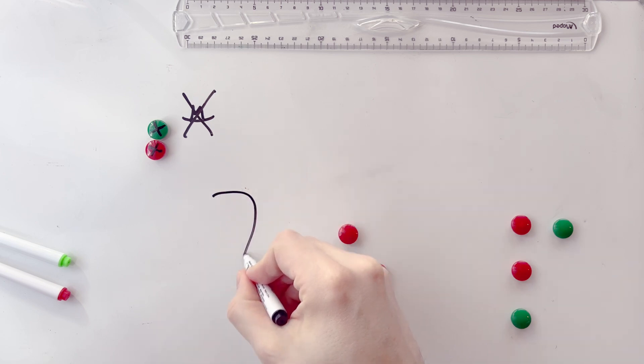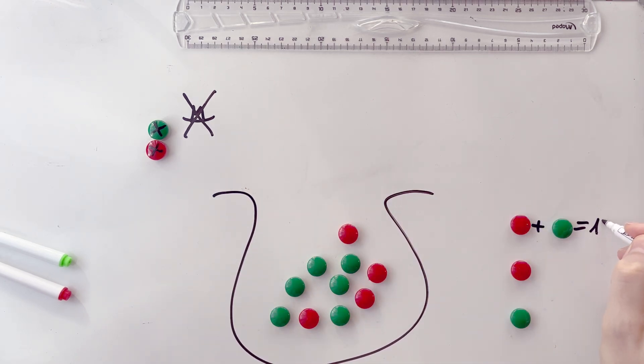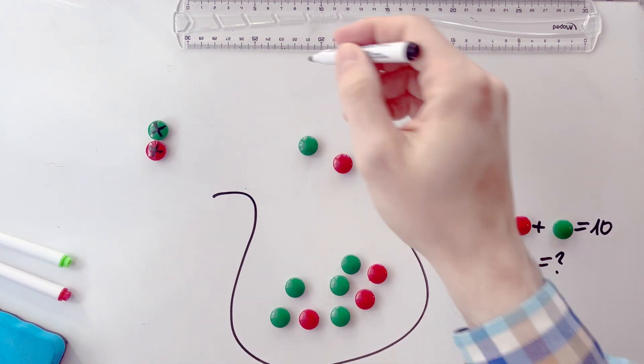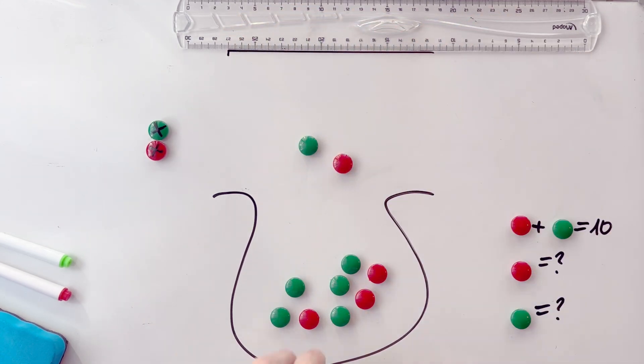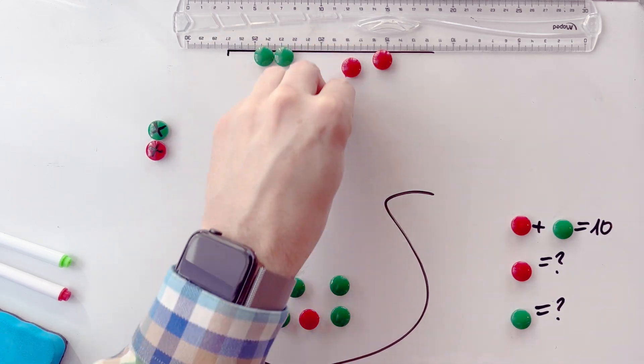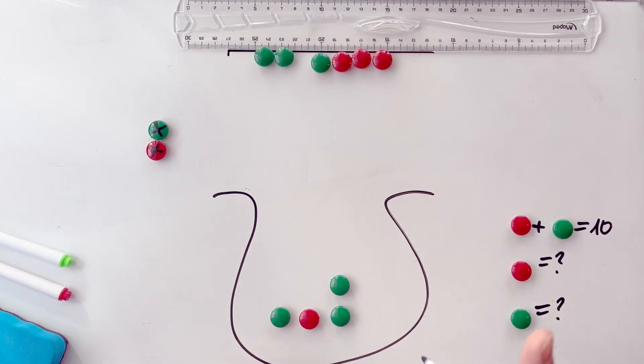In a black bag there are 10 balls. Some are green and some are red. We don't know the ratio, so it could be for example 5-5 or 8-2. Your task is to take all the balls out of the bag one by one and arrange them in a row so that all the green balls are on the left and all the red ones are on the right. In other words, you simply need to sort them.